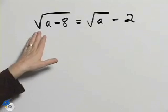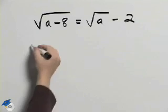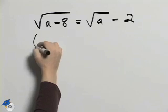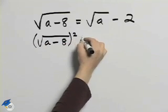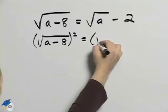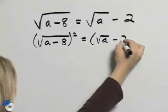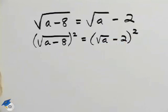To solve this equation we need to undo the radical, and we'll do that by squaring both sides. So we'll have the square root of a minus 8 squared equal to the square root of a minus 2 squared.